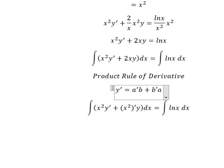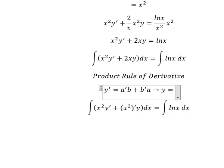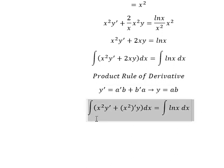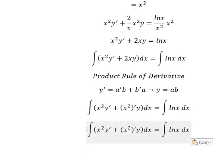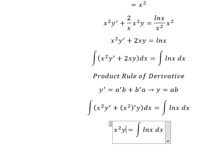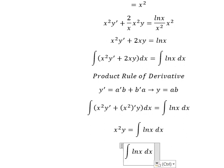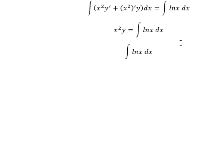So the integration of this gives us y equals A times B, so the integration of that gives us x squared times y. Now we need to concentrate on this side and we can use integration by parts.